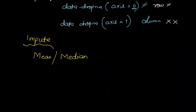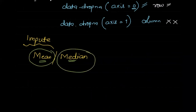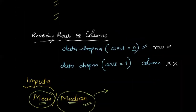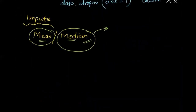Now, when to use mean and when to use median: if you have too many outliers in your data, using mean is not a wise option because mean is highly affected by outliers. If you have too many outliers, using median is a better option because median is not affected by outliers. So it's up to you whether you want to feed in a mean value or a median value.